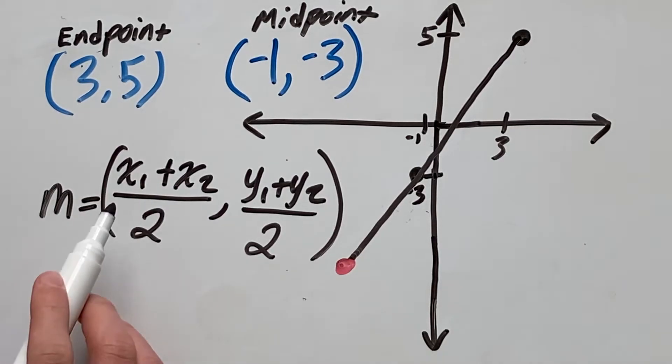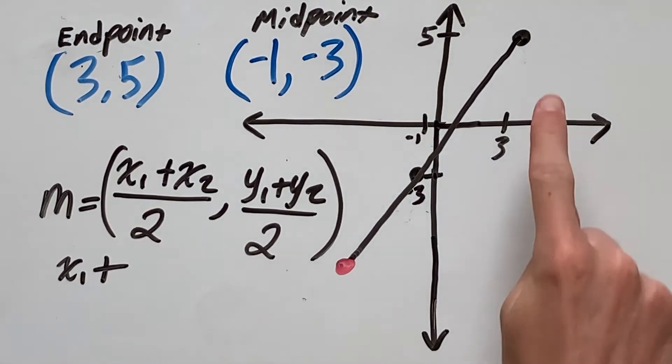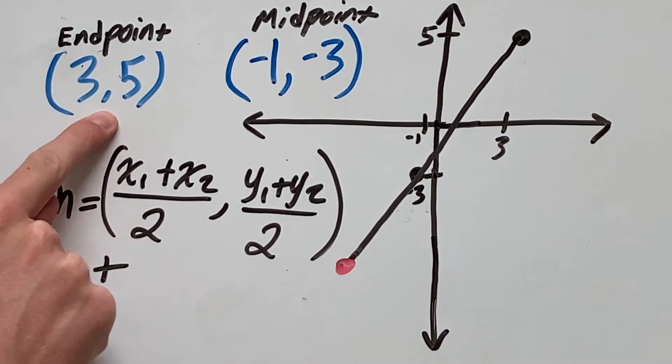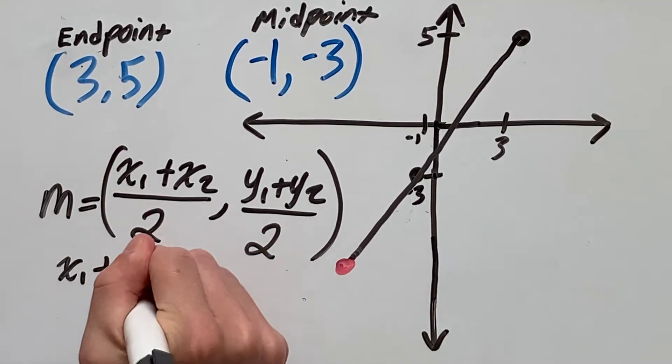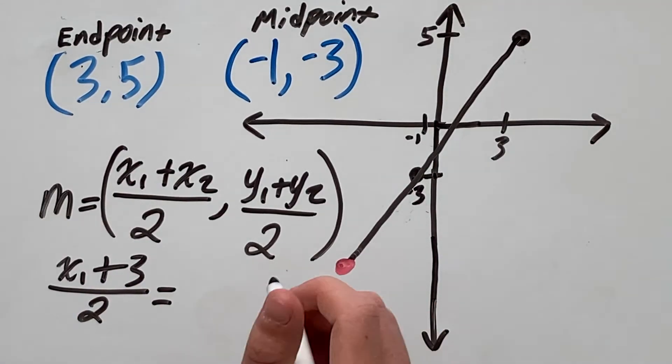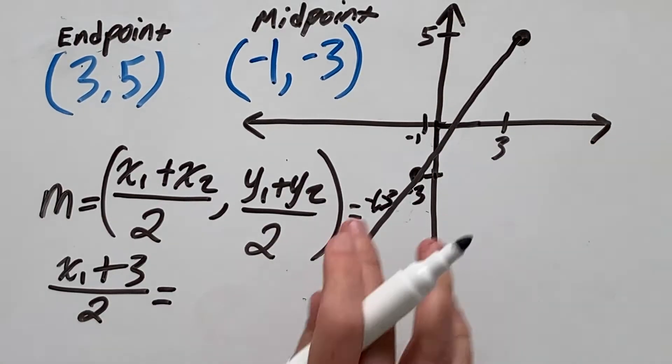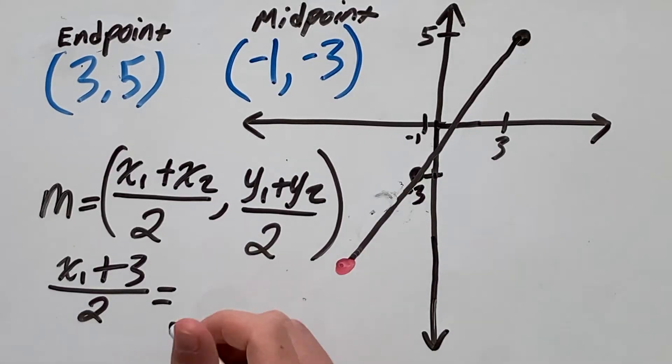So we do not know what x1 is since we are trying to find that as that's the other endpoint. So we'll just write x1 plus, but we do know what x2 is, which is this point up here. So x2 is 3 over 2 and that is equal, since our midpoint is negative 1 negative 3, that is equal to negative 1, which is the x value of our midpoint.